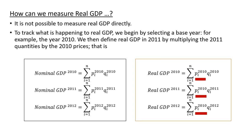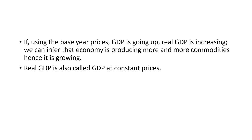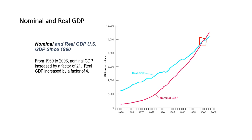If, using base year prices, the GDP is going up — that is, real GDP is increasing — we can infer that the economy is producing more and more commodities, hence it is growing. Real GDP is also called GDP at constant prices. If we graph nominal and real GDP of a country, we may find a year where both are equal, indicating that this is the base year.